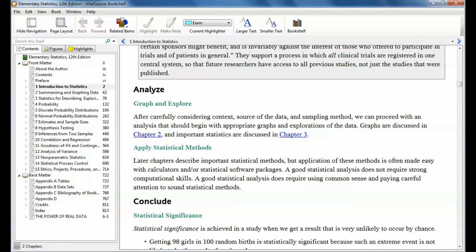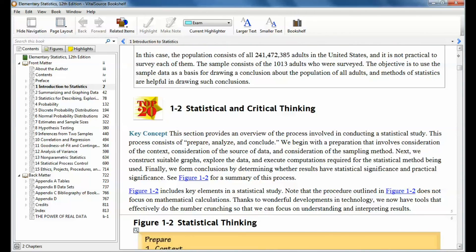Your book says, after carefully considering context, source of data, and sampling method, we can proceed with an analysis that should begin with appropriate graphs and exploration of the data. Graphs are discussed in Chapter 2 and important statistics are discussed in Chapter 3. Make sure that you use some type of way to show your data that is understood by most people. Don't try to get too fancy. There are some ways to categorize data that confuses everybody or almost everybody. But things like pie charts and bar graphs, those usually go over really well. Make sure that if you use something like that, that you don't mislead people by adjusting scales and things like that.